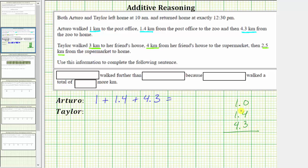Now bring the decimal point down to the sum and add corresponding place values. In the tenths place value, we have zero plus 4 plus 3, which is seven. In the ones place value, we have one plus 1 plus 4, which is equal to six. We now know that Arturo walked a total of 6.7 kilometers.